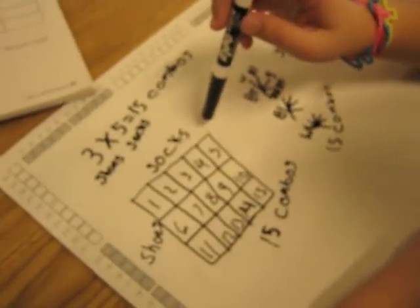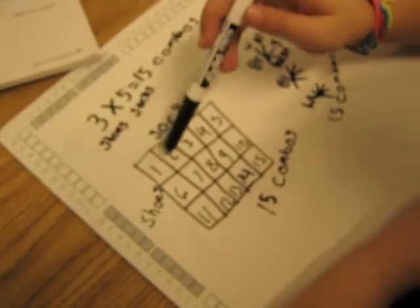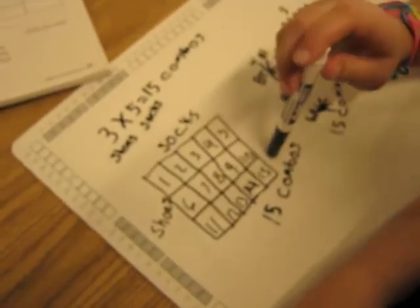And then I did an array and I did five, and then I did three down. So then I counted all the squares up, and I got fifteen.